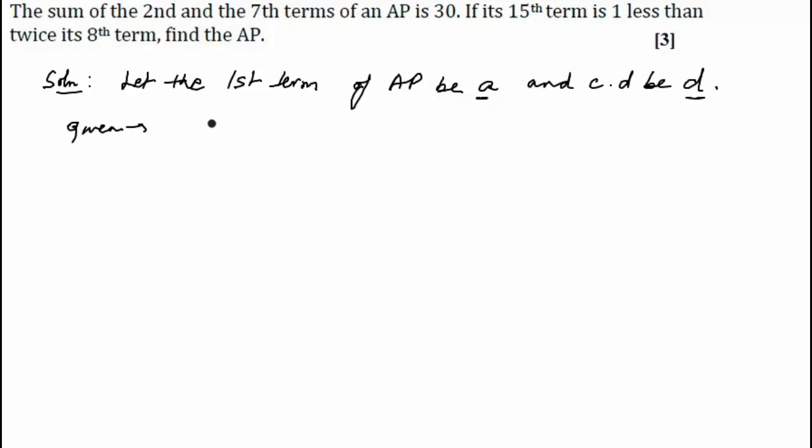We are given that the sum of the second term and the seventh term is 30. Also we are given that the 15th term is one less than twice the eighth term. So this is how we interpret it.